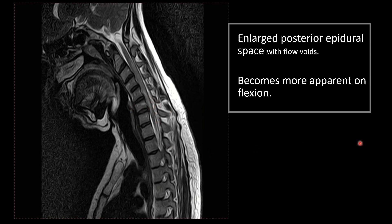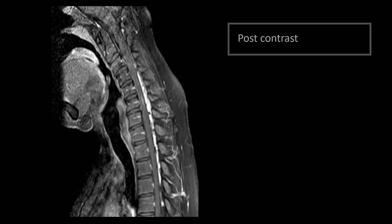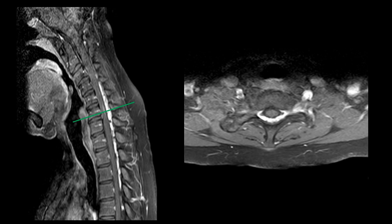This posterior epidural space enhances on contrast. You can see this homogenous post-contrast enhancement along the posterior epidural space which is causing compression of the cervical cord in flexion. On the axial sequence at this level, we see the homogenously enhancing posterior epidural space and anterior shift of the spinal cord.